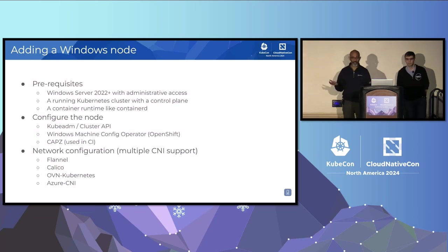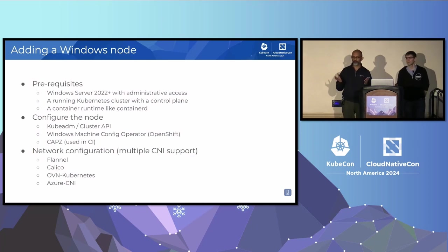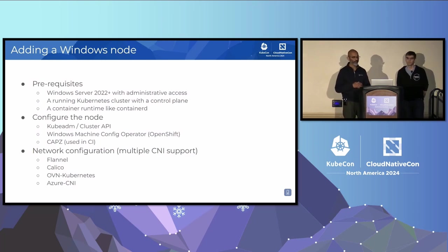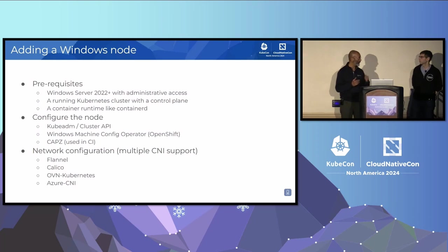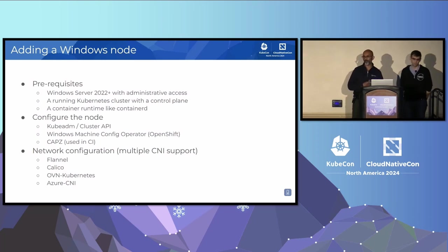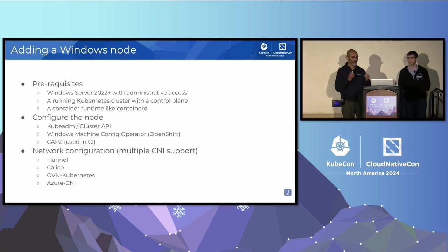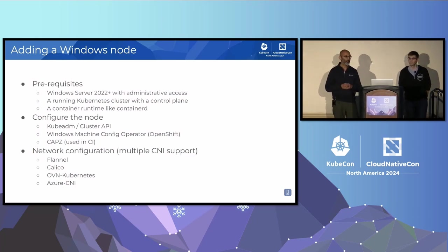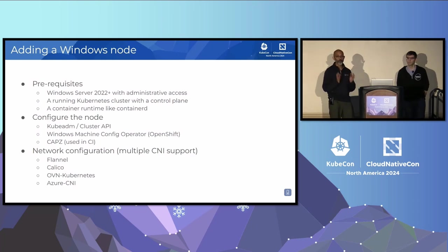So how do you kick things off? How do you add a Windows node? There are some prerequisites. You need a Kubernetes cluster that's up and running with a control plane. We recommend having a Linux worker just to be on the safe side, but it's not a requirement. You then need Windows Server 2022 or higher — Mark will go into that a little bit later. You need admin privileges to this OS because you're going to do things like add a service, which requires admin privileges. And of course you need a container runtime like containerd. Any runtime that supports Windows will work, but most of our testing is with containerd, so that's what we recommend.